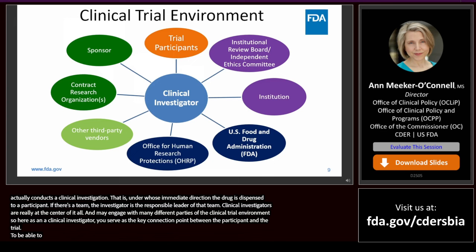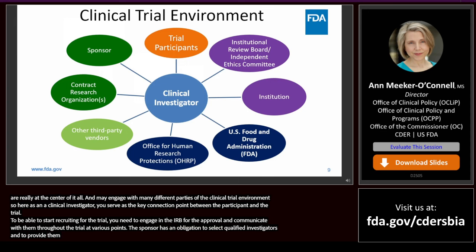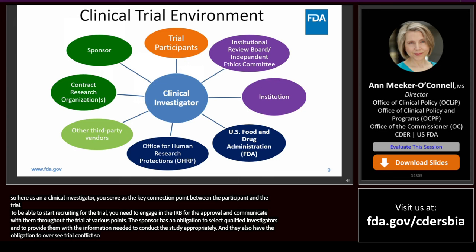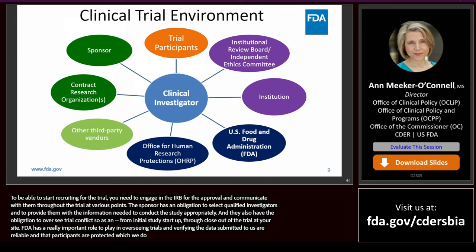To be able to start recruiting for a trial, you need to engage with the IRB for their approval and communicate with them throughout the trial at various points. The sponsor has an obligation to select qualified investigators and to provide them with the information needed to conduct the study appropriately, and they also have an obligation to oversee trial conduct. As an investigator, you'll engage with sponsor and/or CRO staff from initial study startup through closeout of the trial at your site. FDA has an important role in overseeing trials and verifying that data submitted are reliable and that participants are protected, through both reviews of protocols and on-site inspections.